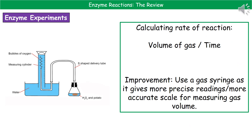To calculate the rate of reaction in this experiment, you divide the volume of gas by the time it took to collect that gas. If asked to suggest an improvement on an exam, one option is to use a gas syringe instead of an upturned measuring cylinder. A gas syringe gives more precise readings because it has a more accurate scale for measuring gas, and it also avoids the problem of the rubber delivery tube falling out of the measuring cylinder. For any experiment making gas, a gas syringe is always a good suggestion for improvement.